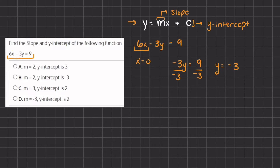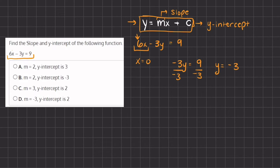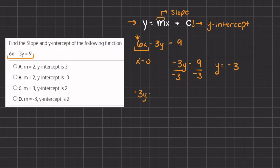So we know our y-intercept equals negative 3. In order to find our slope, we need to find the coefficient of x. The coefficient here is 6, but because we are not in slope-intercept form, we cannot say the slope is 6. We have to simplify it. We are going to subtract 6x on both sides, leaving us with negative 3y equals negative 6x plus 9.